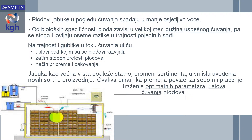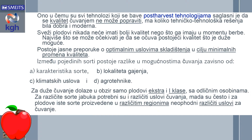Jabuka kao voćna vrsta podlaže stalnoj promeni sortimenta u smislu uvođenja novih sorti u proizvodnju. Ovakva dinamika promena povlači sa sobom i praćenje i traženje optimalnih parametara uslova čuvanja plodova jabuke. Ono u čemu se svi tehnolozi koji se bave post-harvest tehnologijama slažu jeste da se kvalitet čuvanjem ne može popraviti, makoliko tehnička rešenja bila dobra i moderna. Sveži plodovi nikada neće imati bolji kvalitet nego što su ga imali u momentu uberbe. Najviše što se može očekivati je da se očuva postojeći kvalitet što je duže moguće.